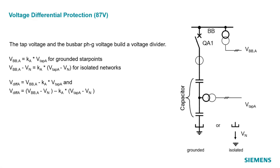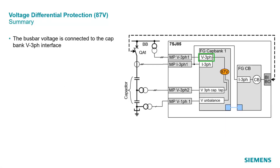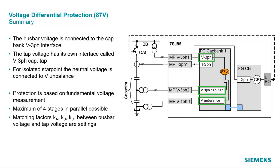For this, the function offers a compensation triggered by binary input or protocol. When triggered, the momentary voltage ratio between bus bar and tap voltage is measured for each phase and stored. The ratios then replace the setting values Ka in the formulae, now indicated by KCpa. The bus bar voltage is connected to the capacitor bank V three-phase interface. The tap voltage has its own interface called V three-phase capacitor tap. For an isolated star point, the neutral voltage is connected to V unbalance. The protection is based on fundamental voltage measurement. A maximum of four stages in parallel is possible. Matching factors between bus bar voltage and tap voltage are setting values, and the compensation of an operational differential voltage replaces the matching factor settings by the measured matching factors.